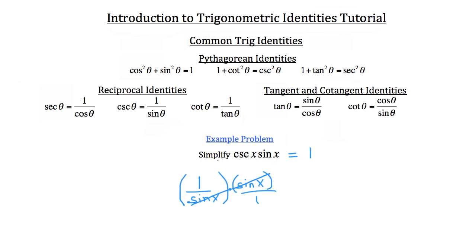Notice how we used the reciprocal identity of the cosecant of x to simplify this problem.